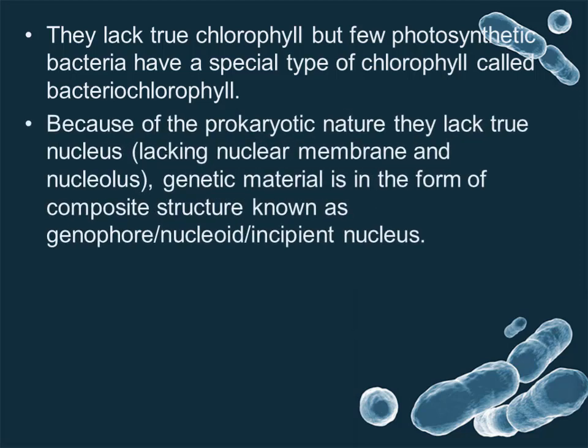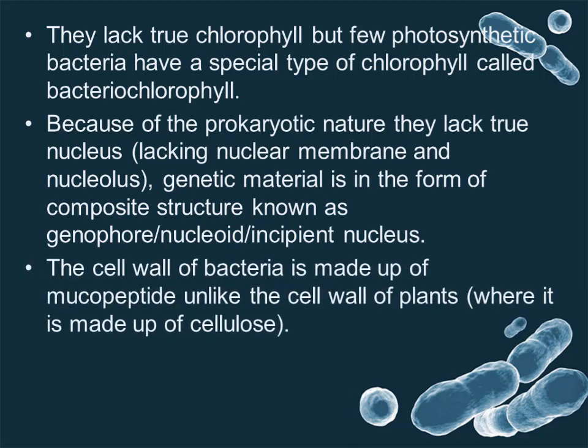Bacteria lack chlorophyll, but a few photosynthetic bacteria have a special type called bacteriochlorophyll. Because of their prokaryotic nature, they lack a true nucleus, having no nuclear membrane and no nucleolus. The genetic material is in the form of a composite structure known as the genophore, nucleoid, or incipient nucleus. The cell wall of bacteria is made up of mucopeptide, unlike the cell wall of plants, which is made up of cellulose.